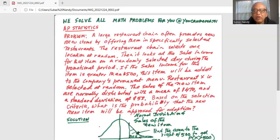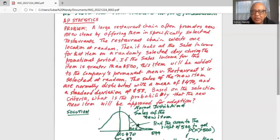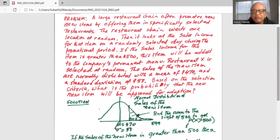So I have drawn a normal distribution curve, a bell-shaped curve with mean 470 and standard deviation of 53. And we know the new item will be adopted if the sales of the new item exceed $500. So we have to find the area under the normal curve to the right of 500 to get the probability of X greater than 500, where X is the sale of that particular item on a randomly selected day.